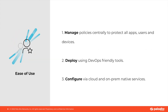Moving on to the second pillar — these are the three things that your container network solution tool should be able to do in the context of ease of use. Firstly, manage policies centrally to protect all apps, users, and devices. Fragmented point products lead to gaps in your security policies and posture that the adversary can exploit, so you want to make sure that your solution can be managed through one single pane of glass.